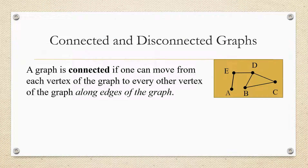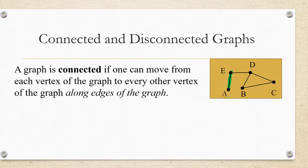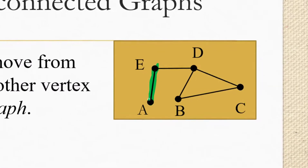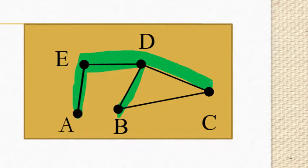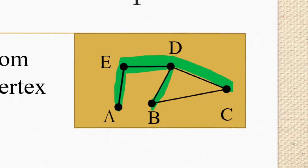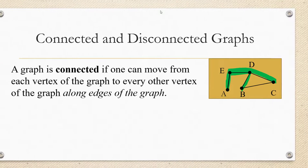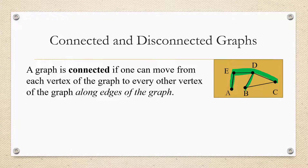A connected graph is one in which we can move from any vertex on the graph to any other vertex on the graph without going off the graph. For example, here we have a connected graph. We can move from vertex A to any vertex we want. We can move directly from A to E. To get to D, we could go through E and over to D. To get to B, we could continue on this way. If we wanted to go to C, we could go from E to D to C. If you can get from any one vertex on the graph to the others, this graph is connected.